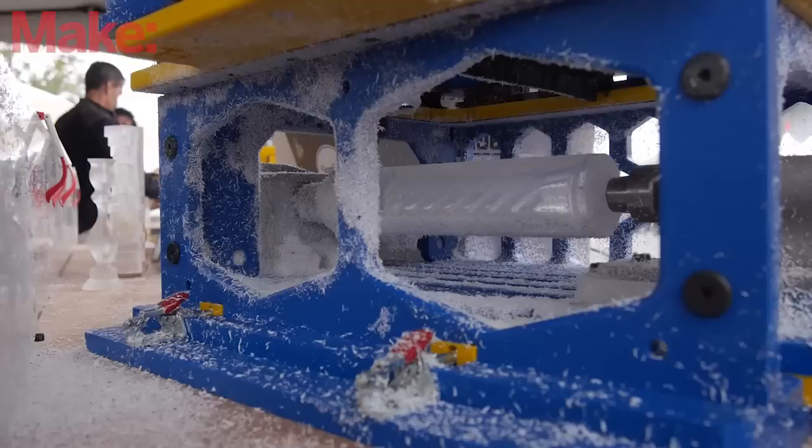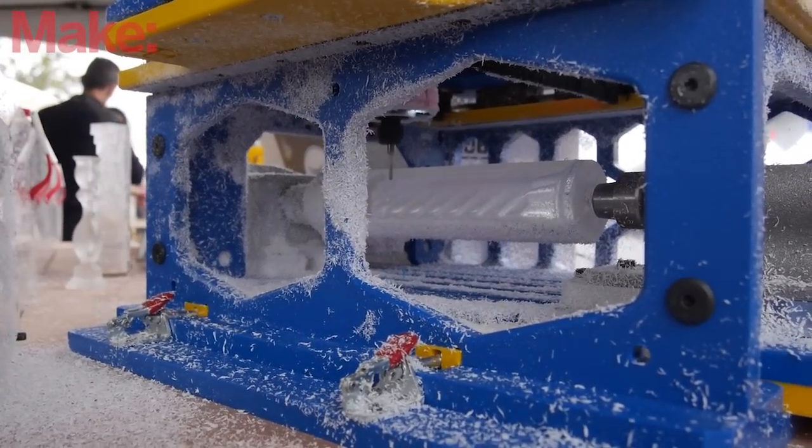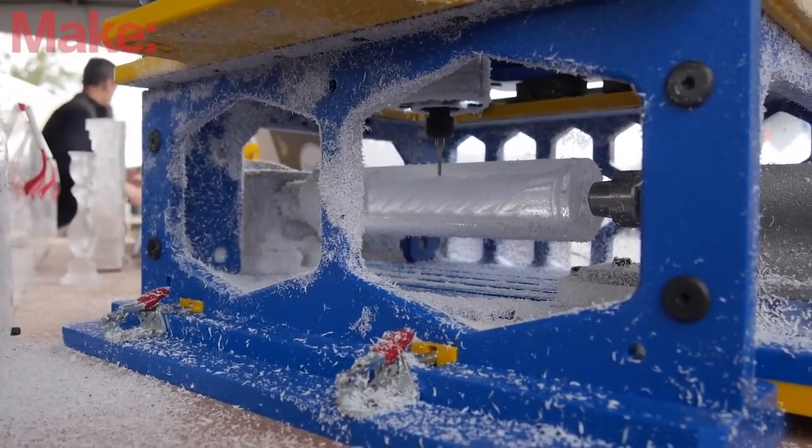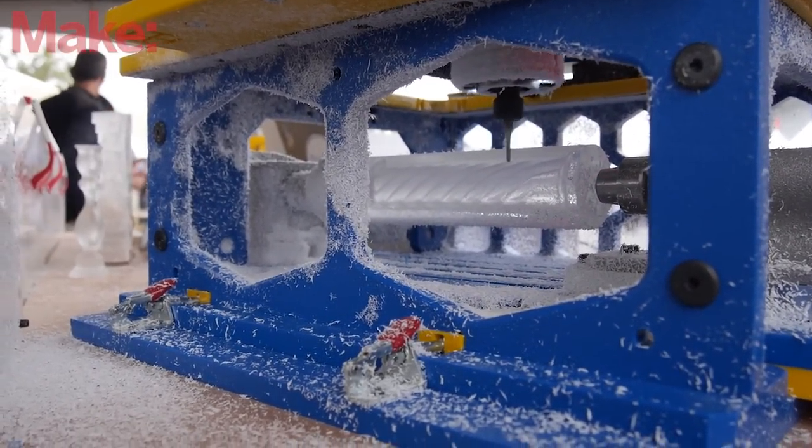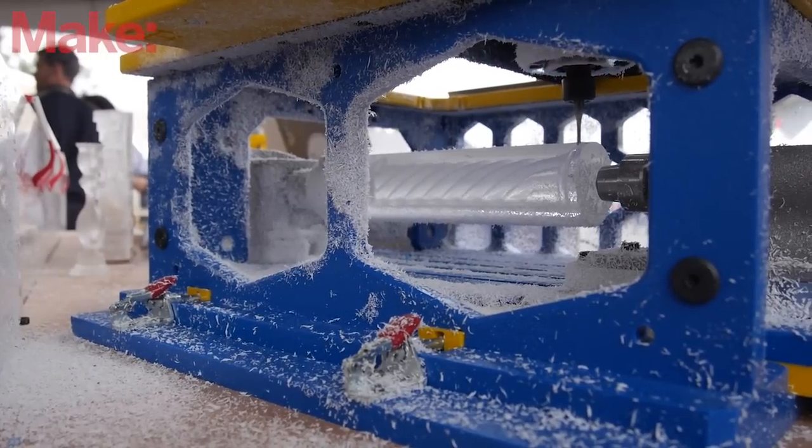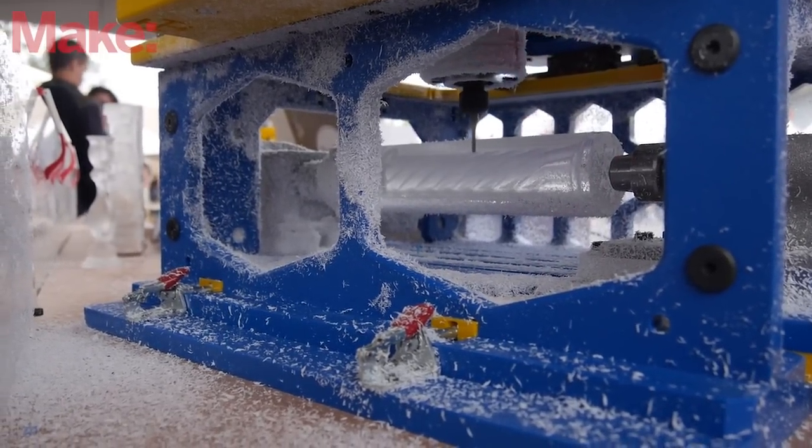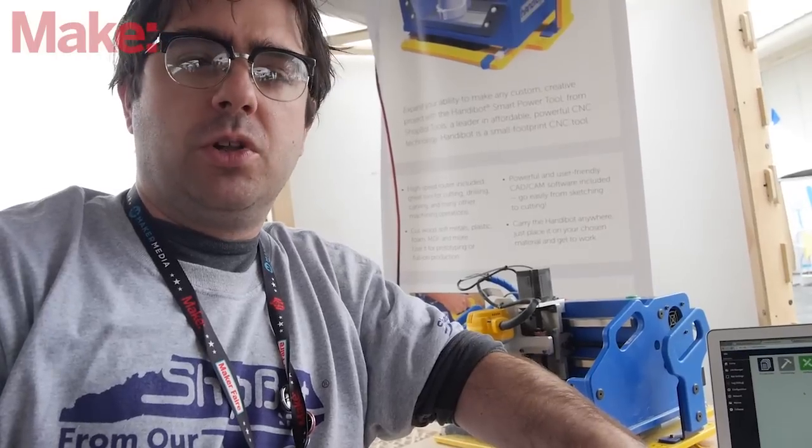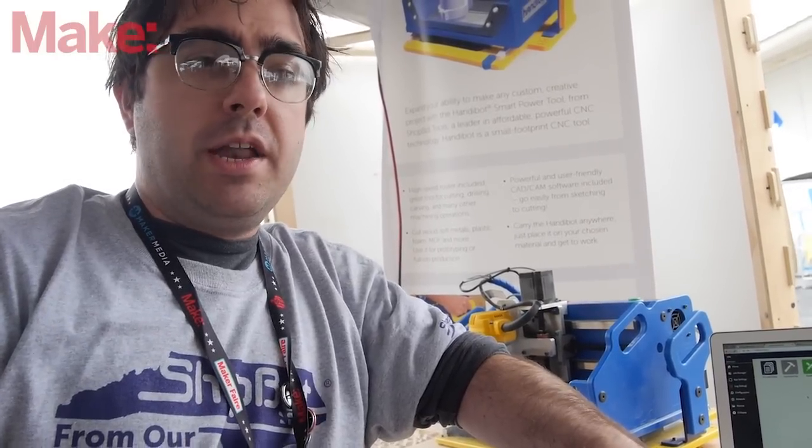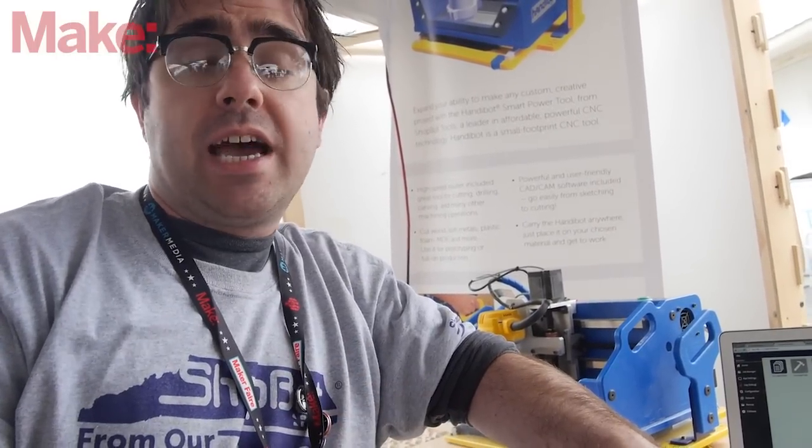The tool and the FABMO software framework are all completely open source. The blueprints for the tool are available online. The software is available online on the HandyBot website and on GitHub. You can go there, you can check out the software framework. We want to make FABMO and the motion system for this tool available to people who not only are using the HandyBot but are doing DIY CNC.